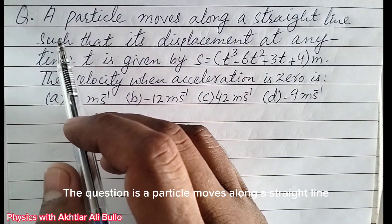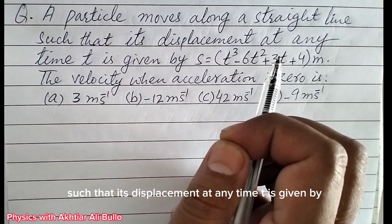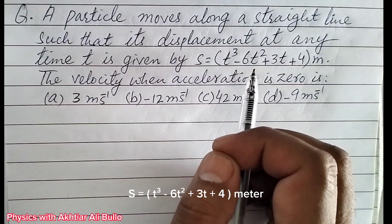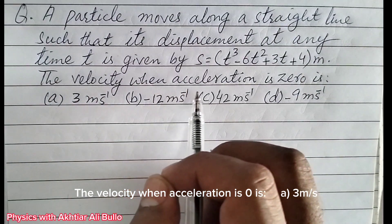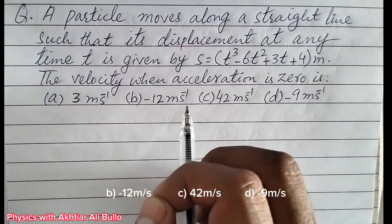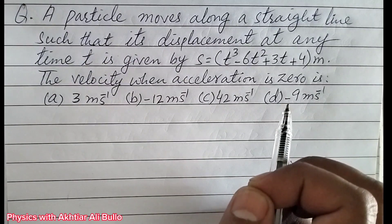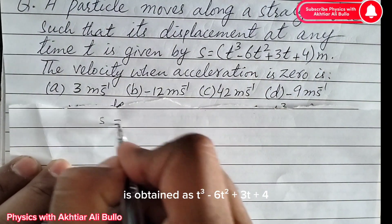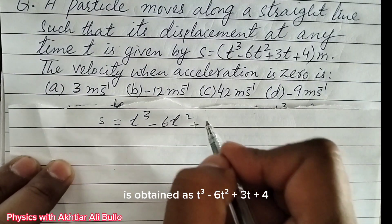The question is: a particle moves along a straight line such that its displacement at any time t is given by s = t³ - 6t² + 3t + 4 meters. The velocity when acceleration is zero is: a) 3 m/s, b) -12 m/s, c) 42 m/s, d) -9 m/s. The displacement s is given as t³ - 6t² + 3t + 4.